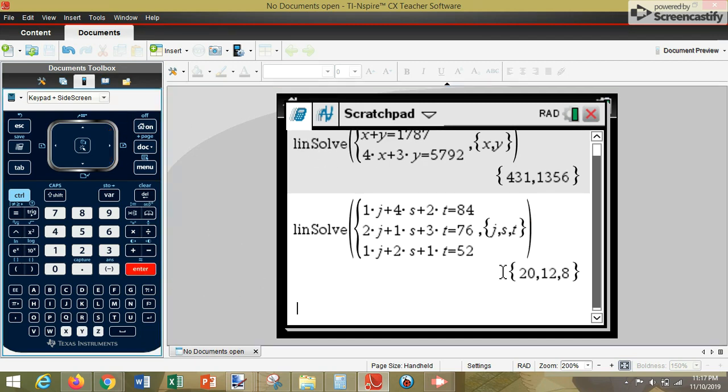This is your answer. J equals 20, S equals 12, and T equals 8. That basically means jeans cost $20, shorts cost $12, and T-shirts cost $8.